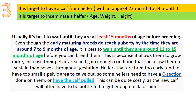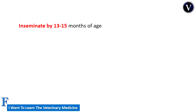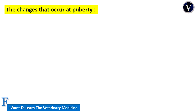Some people got a little bit confused, understanding that the heifer will reach puberty at 50 months of age. But what I mean is that insemination occurs from 13 to 15 months, and the heifer reaches puberty from 7 to 9 months. Today we are going to talk about the changes that occur at puberty.